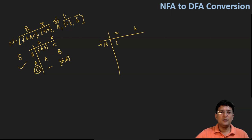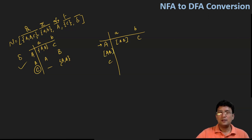So A on input symbol a goes to both A and B, so we make a new state AB. And A on small b goes to C. So there are two new states here: AB and C, and we will show the transitions of these states on symbols a and b.